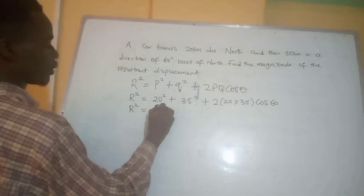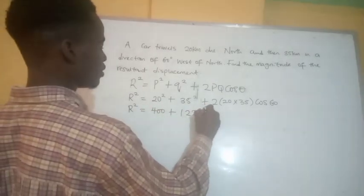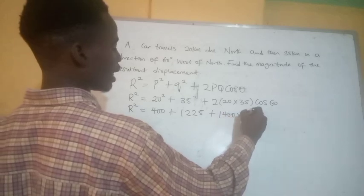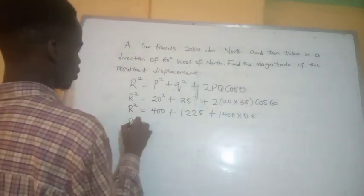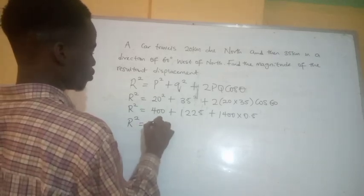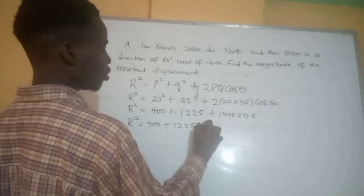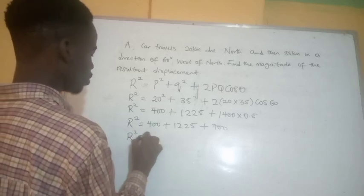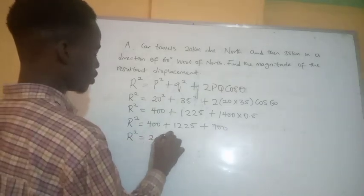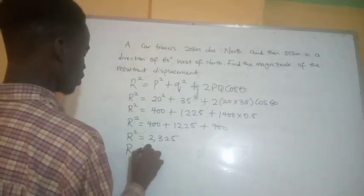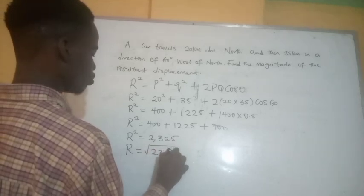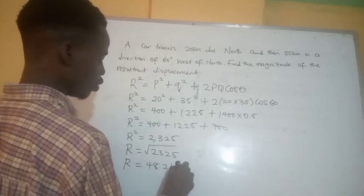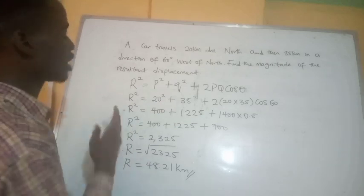Solving this, R squared equals 400 plus 1225, then plus 1400 times 0.5, which is 700. So R squared equals 400 plus 1225 plus 700, which equals 2325. Therefore our resultant displacement is the square root of 2325, which gives us 48.28 kilometers.